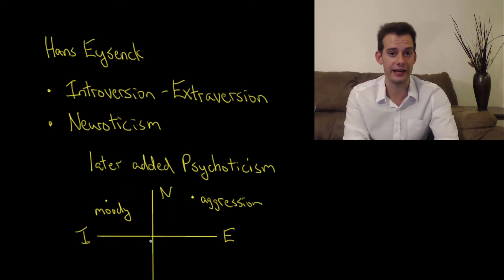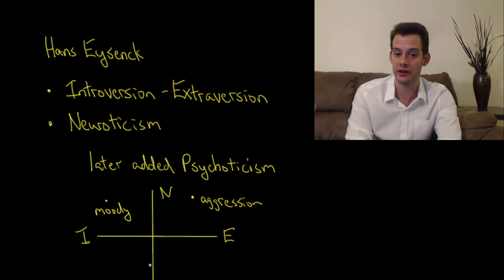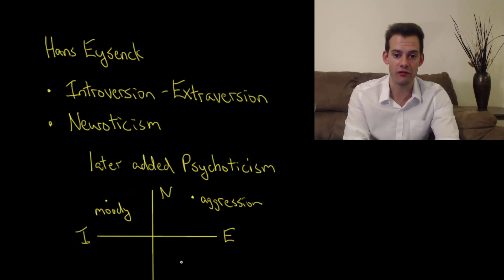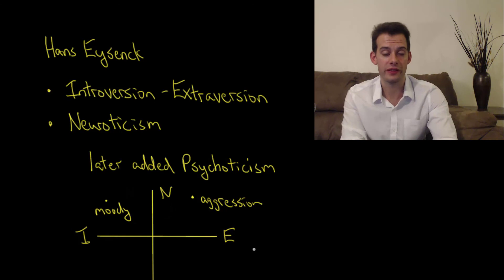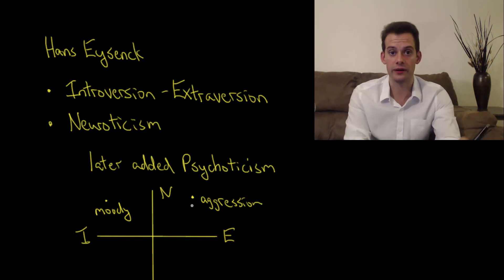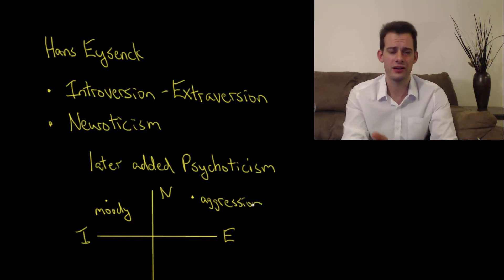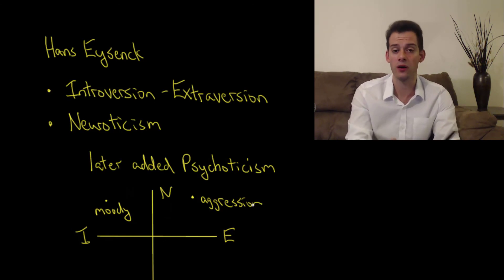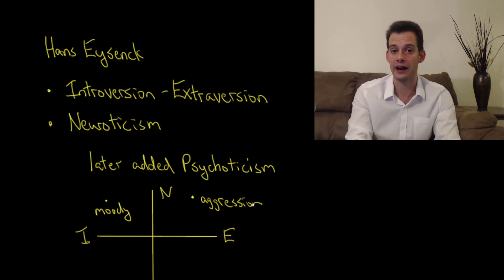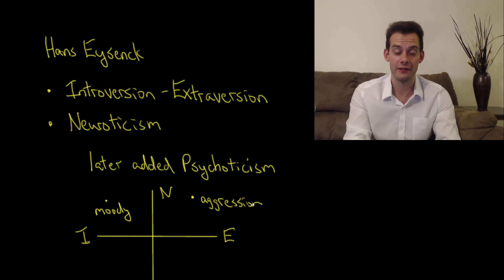We can also liken this to Galen's four personality types based on humors, because each of the four quadrants in Eysenck's model would match up with terms like sanguine, choleric, melancholic, or phlegmatic. But we might think two or even three dimensions are not quite enough to describe all of the nuances in differences between people's personalities. So in the next video we'll look at another model — the five-factor model — which uses five factors for explaining personality.